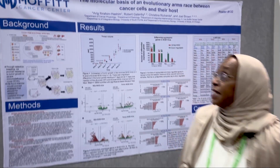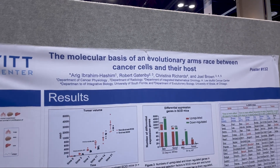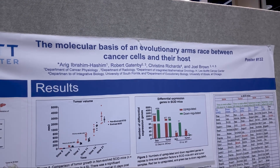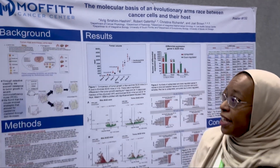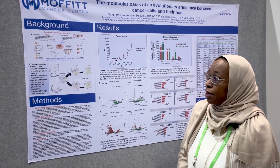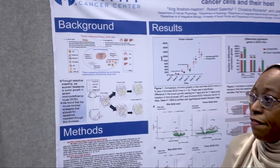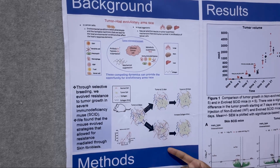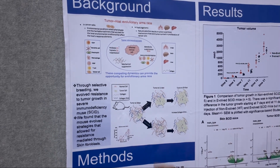My poster is investigating the molecular basis of an evolutionary arms race between cancer cells and their host. In my previous work, by selective breeding, I have evolved a resistance in tumor growth in severe immunodeficient mice. I found that the mouse involved strategies that allowed resistance mediated through skin fibroblasts at an early time point.